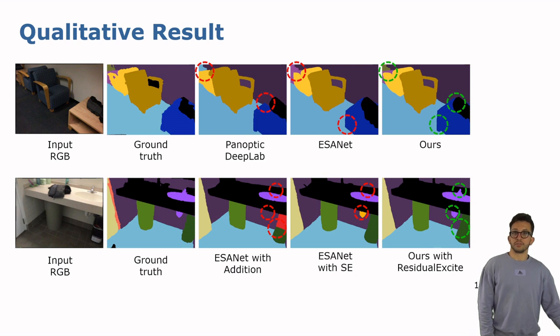Here, some qualitative results, where the input RGB and the ground truth are shown. In the circles you can see challenging scenarios, where the network is expected to segment fine-grained objects or put together separate segments into the same object, and in the red circles you can see the errors produced by the baselines, while in the green circles you can see how our approach achieves correct segmentation of the scene.